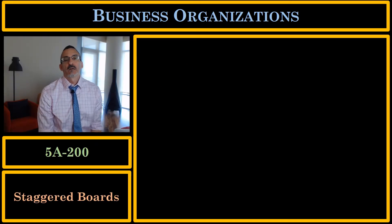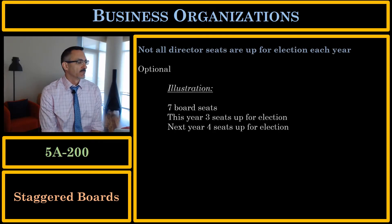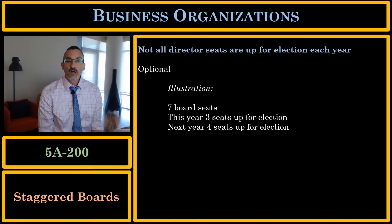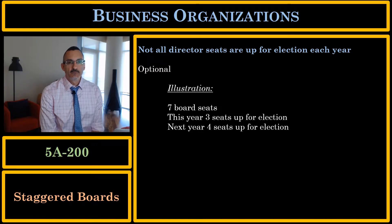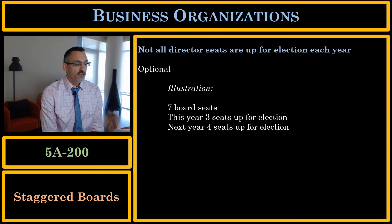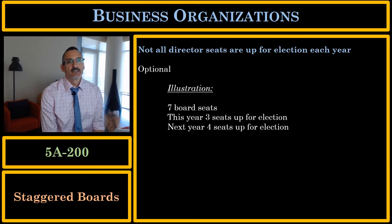What is a staggered board — sometimes called a classified board? A staggered board is one where not all directors are up for election each year. The default rule is that every year, every director is up for election. Under a staggered board, which is optional, the entire board is not up for election. For example, with a seven-director board: this year three seats are up for election and four are not; the following year four seats are up and three are not — continuing in that alternating pattern.